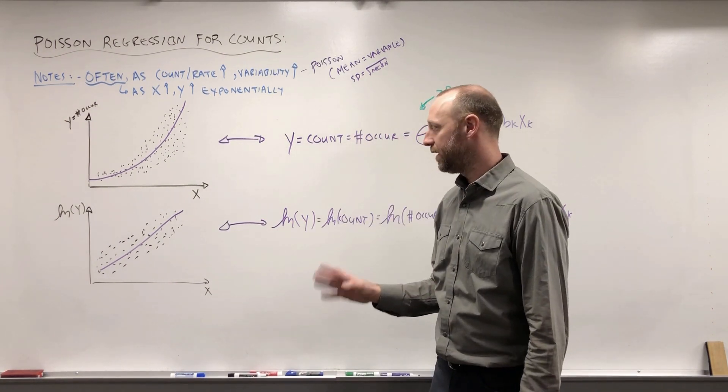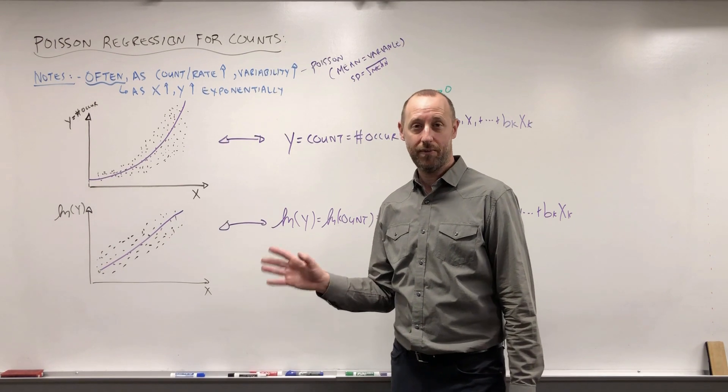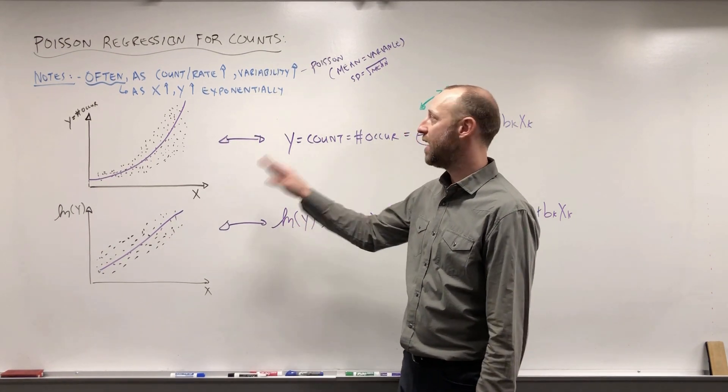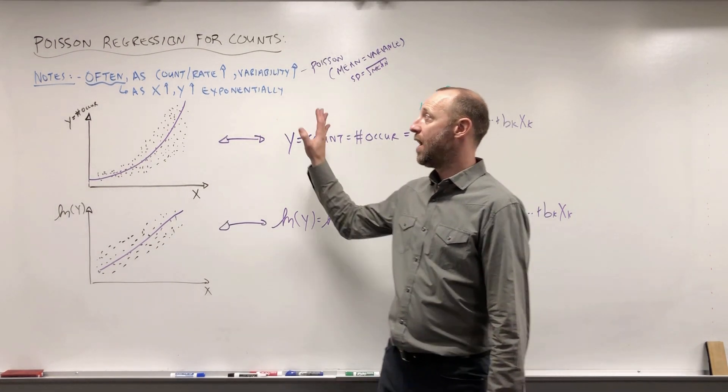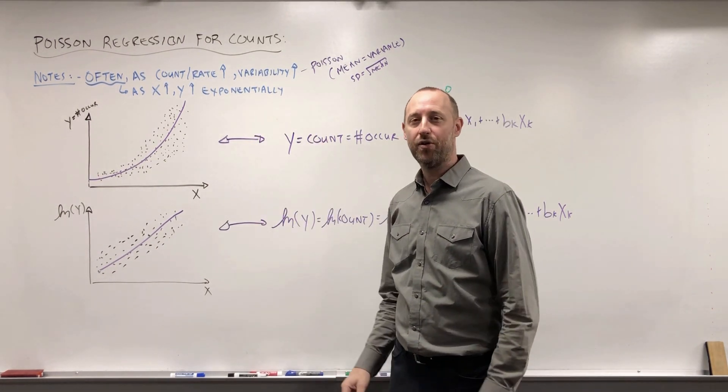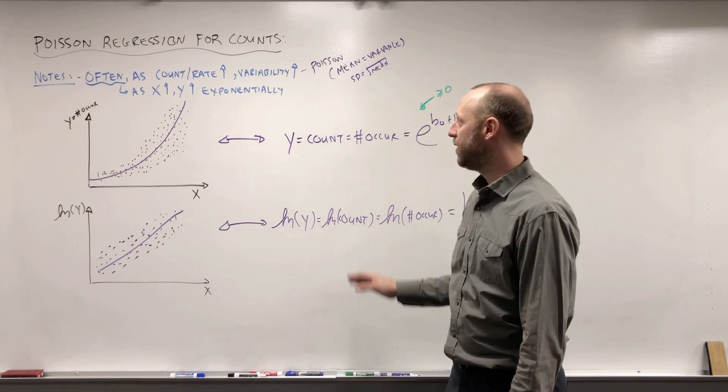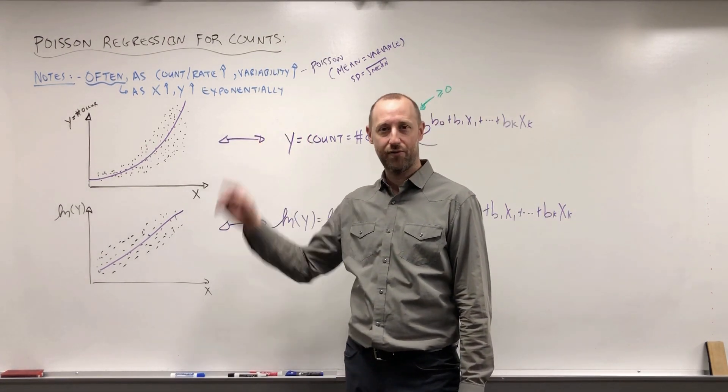What we're going to do now is, I'm going to talk a little bit about the assumptions for Poisson regression, whether it's count data or rate data. And we're also going to move into talking about how do we fit the Poisson regression model when we have rate data. How do we account for the fact that people have different follow-up times?